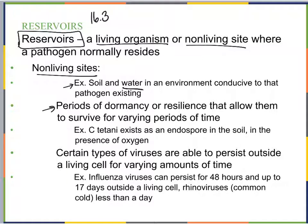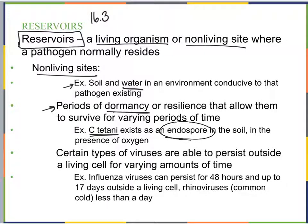There are periods of dormancy or resilience that allow pathogens to survive for varying periods of time. For example, Clostridium tetani exists as an endospore in the soil in the presence of oxygen. As an endospore, it is dormant — not vegetative — and resilient to its environment. The soil would be the reservoir for Clostridium tetani.